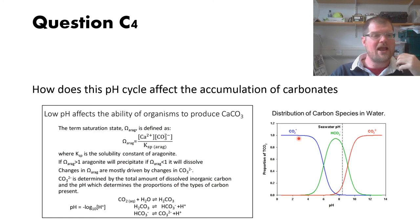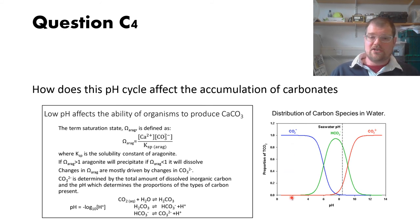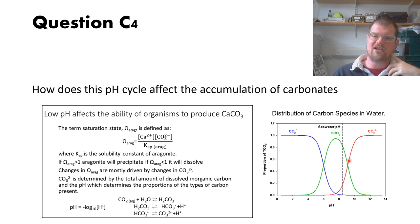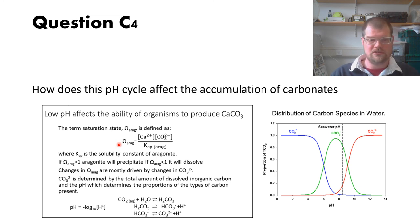The last part of the question was how that pH cycle affects the ability of organisms to produce calcium carbonates — to take dissolved inorganic carbon and calcium out of the ocean and form large accumulations of carbonates. You'd have needed to refer back to the equations or a diagram to show that pH determines the relative proportions of carbonate, bicarbonate, and CO₂. At low pH you have less carbonate ion dissolved in the water.